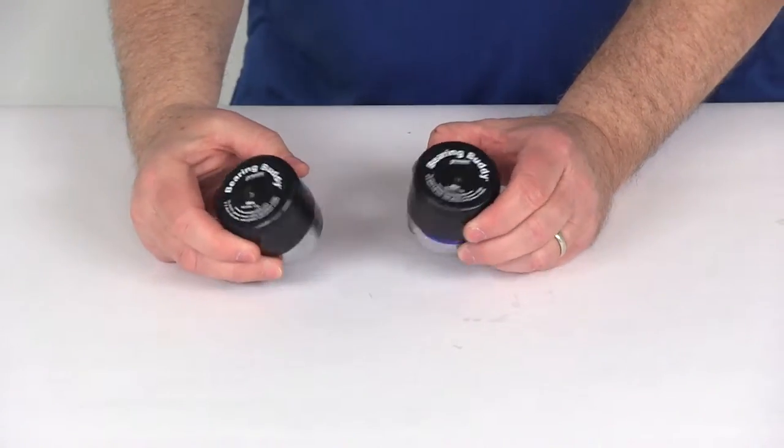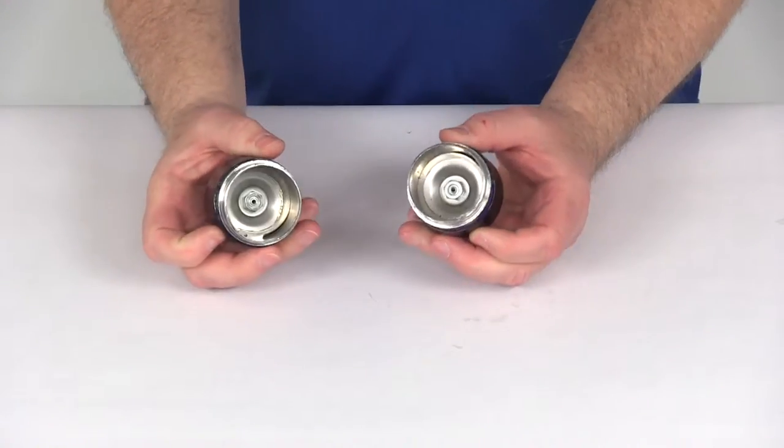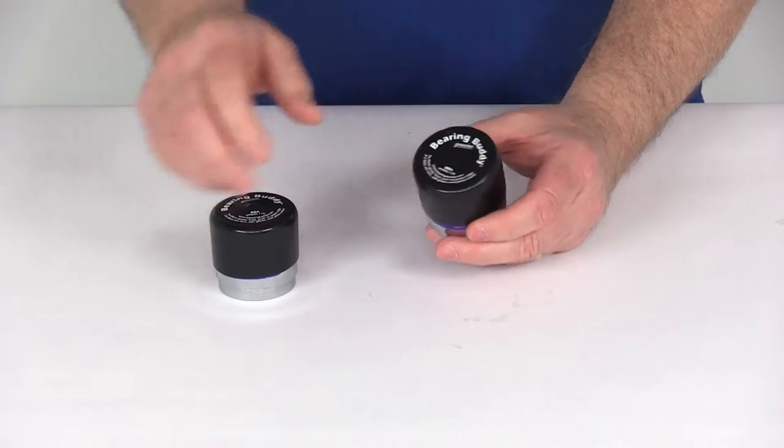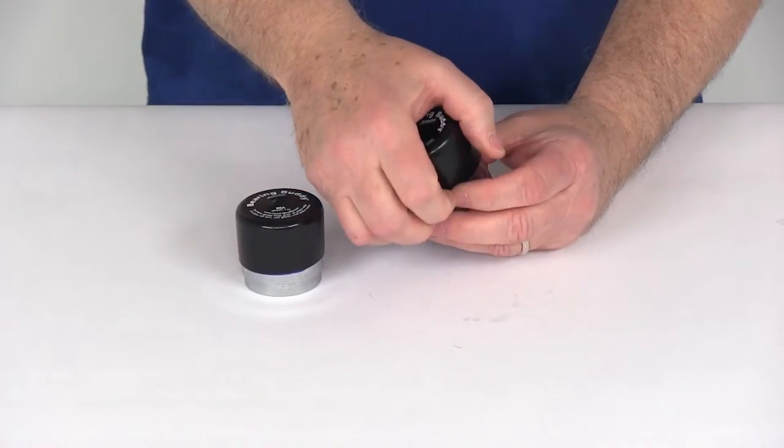Today we're going to take a look at the chrome-plated Bearing Buddy bearing protectors for 1.810 hub bore. This part is for a quantity of two.